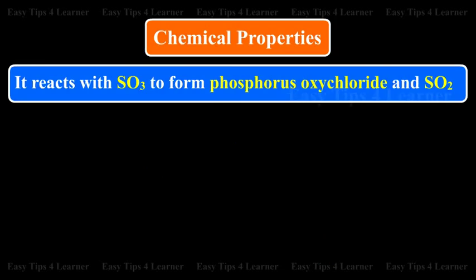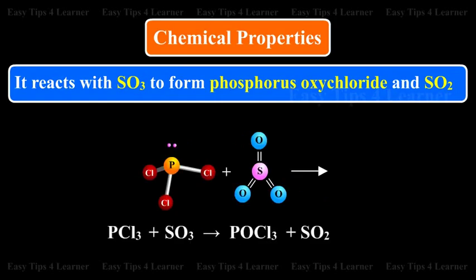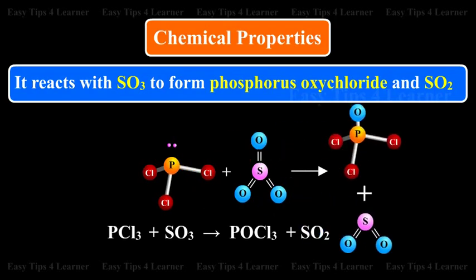It reacts with SO3 to form phosphorus oxychloride and SO2. SO3 plus PCL3 gives POCl3 plus SO2.